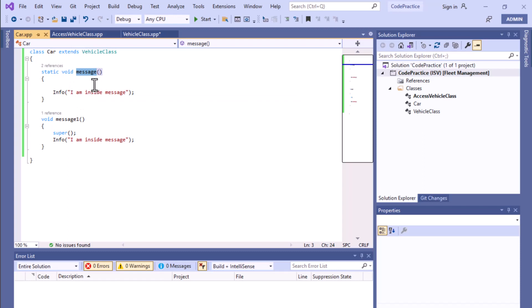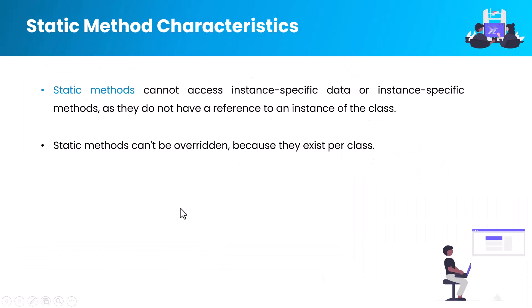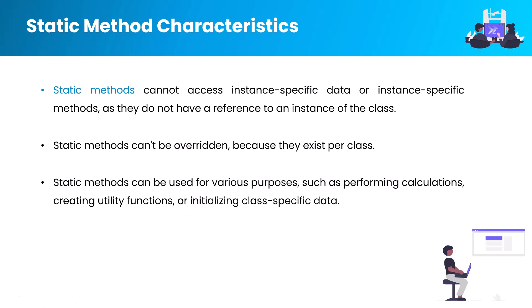So the learning point is: we cannot override a static method even if there is a child-parent relationship. Our third point is that static methods can be used for various purposes such as performing calculations, creating utility functions, or initializing class-specific data. I hope it's now clear what a static method is and some of its key characteristics. Thanks for watching this video — take care, bye bye, see you in the next one.